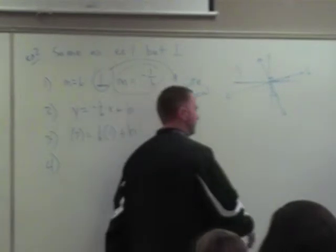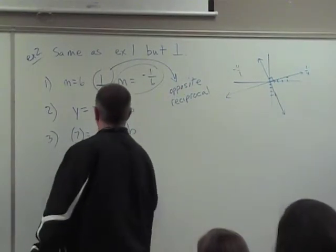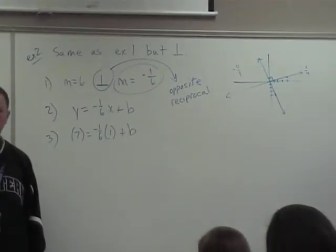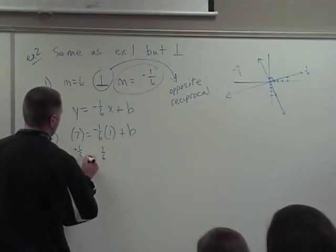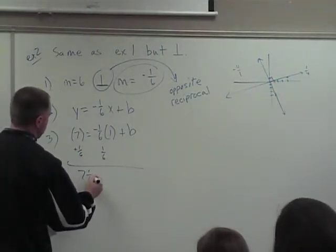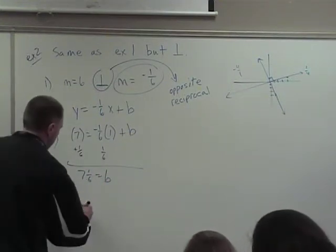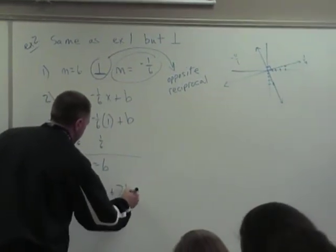Everybody solve for b. We'll run the same. Cam? Shouldn't that be a negative one-sixth? Yes, it should be negative. Sorry, thank you. Negative one-sixth. All right, what did we get? We add one-sixth to the left. We get seven and one-sixth equals b. Step four and rewrite the equation. Y equals negative one-sixth x plus seven and one-sixth.